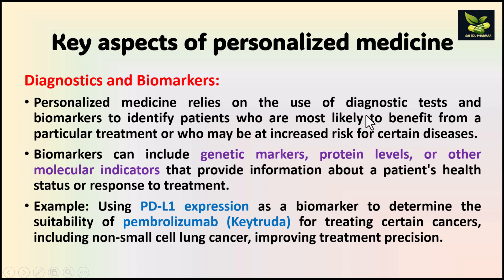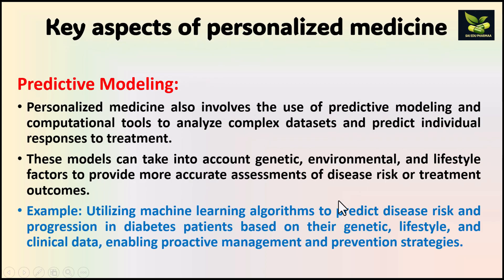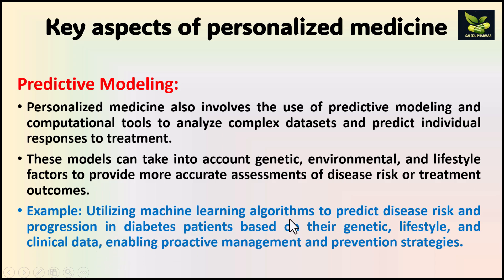Next is predictive modeling, also called predictive analysis. Computational tools are used to analyze complex data sets and predict individual responses to treatment. These tools take into account genetic, environmental, and lifestyle factors of patients to provide more accurate assessment of disease risk or treatment outcomes. An example is utilizing machine learning algorithms to predict disease risk and progression in diabetes patients based on their genetic, lifestyle, and clinical data, enabling proactive management and prevention strategies.